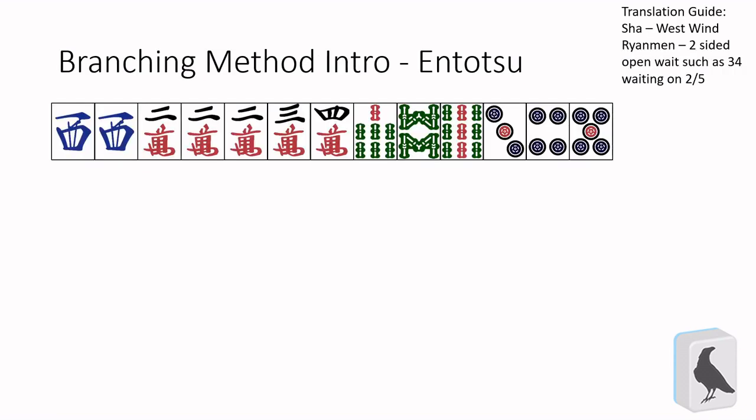Now, this is one of the simpler complex shapes that hands can come into. It's called an entotsu. We can see that this hand has two completed sets, so we need the entotsu to become two more sets of three and a pair to be able to win. It's a perfect candidate for the branching method. So first step here, let's isolate the triplet, in this case the two-mon, and assume one branch of our split is a pair and the other is a triplet.